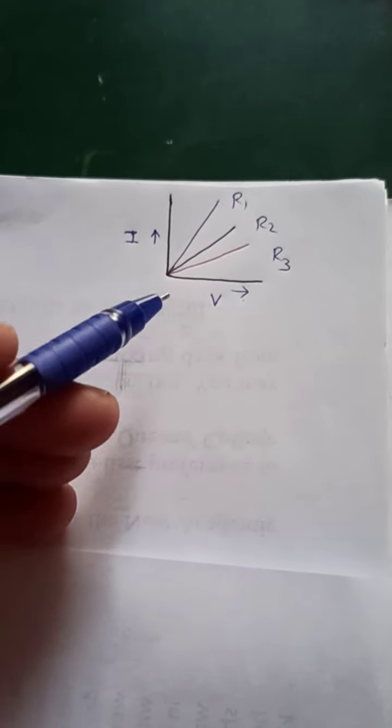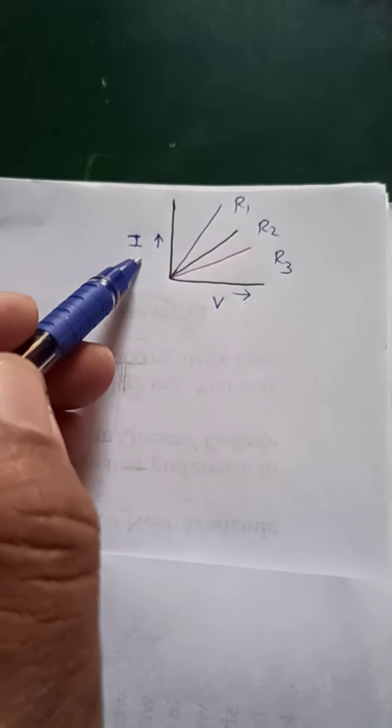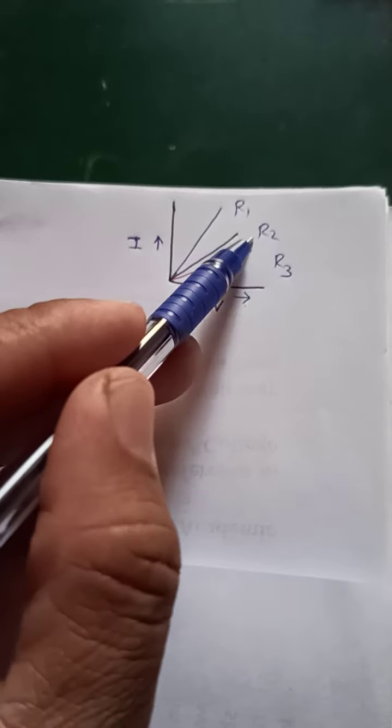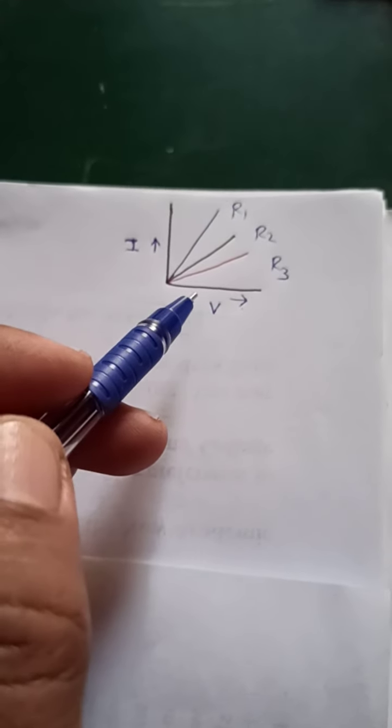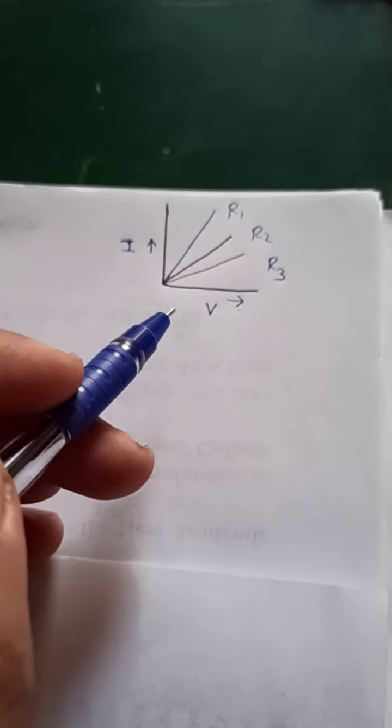In this question, a V-I graph is given with three resistances R1, R2, and R3. You have to find which one has the higher resistance, which one is the most.